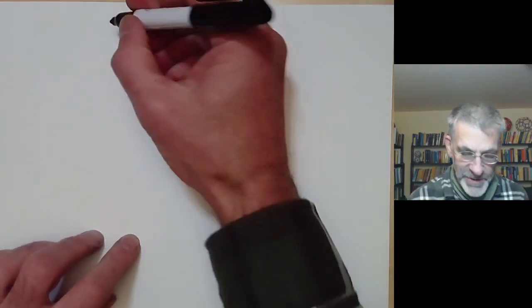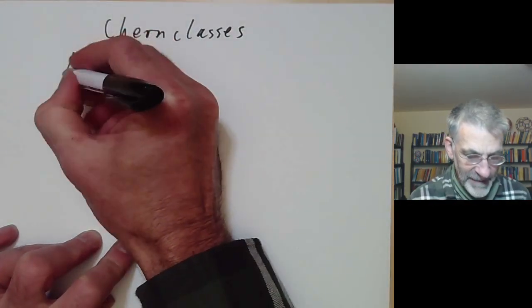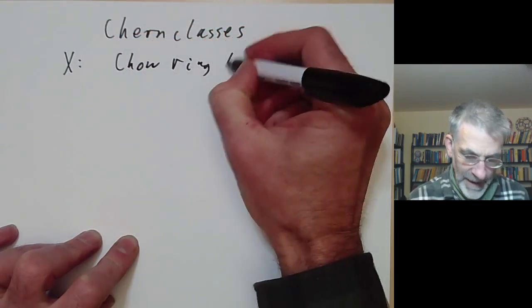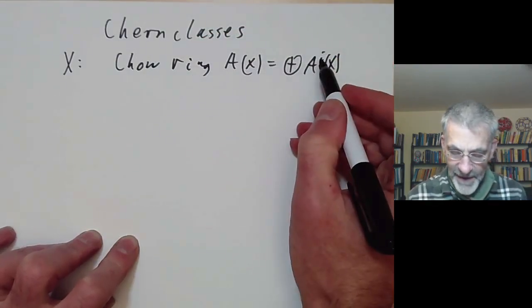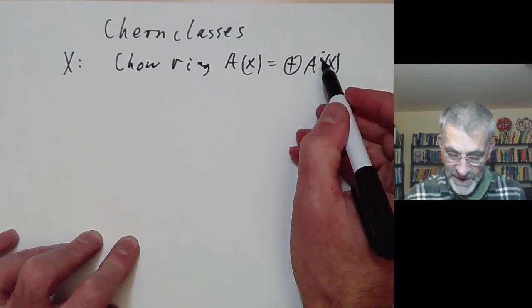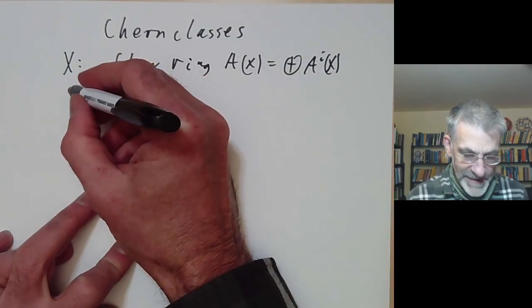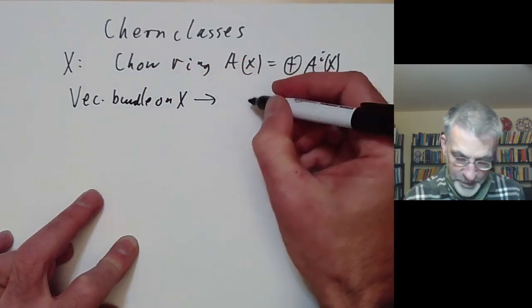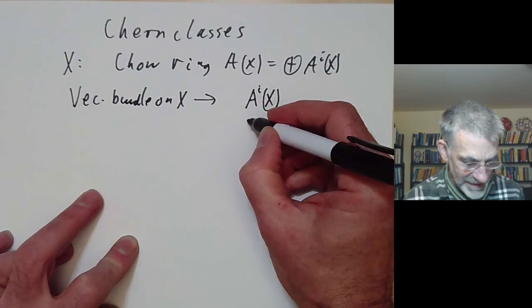This is a second talk on the Chow ring of a variety and will be about Chern classes. We recall from the first lecture that for any non-singular variety X, we defined a Chow ring A of X, which was graded, where A^i of X is the ring of rational equivalence classes of cycles of codimension i. Given a vector bundle on X, we can get various elements of the Chow ring called Chern classes c_i.